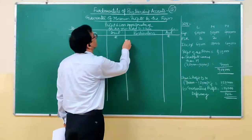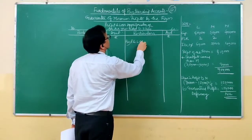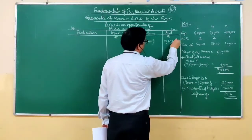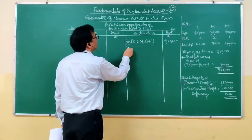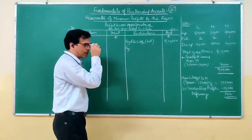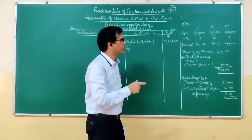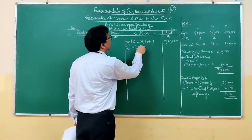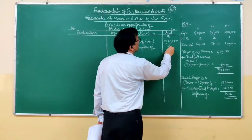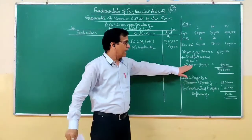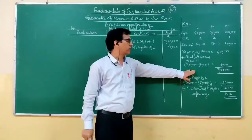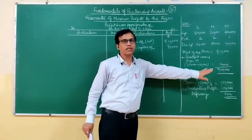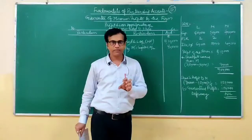We prepare the profit and loss appropriation account. On the credit side: net profit as per profit and loss account is eight lakh ten thousand rupees. Plus, shortfall recovered from M's capital account: M guaranteed two lakh fifty thousand rupees but earned only one lakh sixty thousand rupees for the firm, so ninety thousand rupees is debited to M's capital account. Total becomes nine lakh rupees. On the debit side: interest on capital — sixty thousand for L, fifty thousand for M, forty thousand for N — totaling one lakh fifty thousand. Remaining divisible profit is seven lakh fifty thousand rupees.